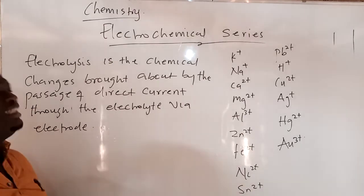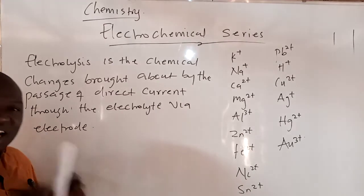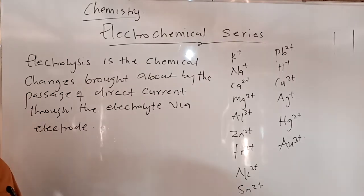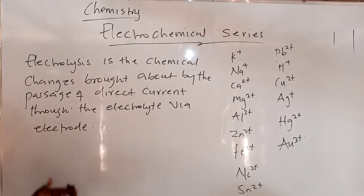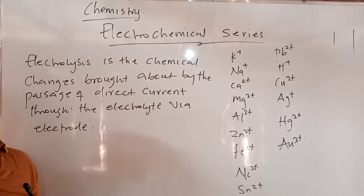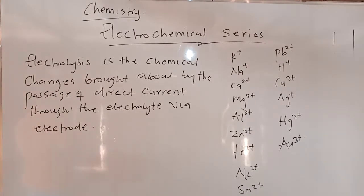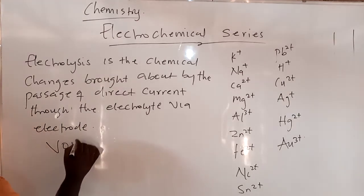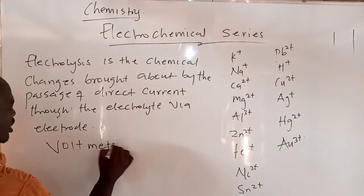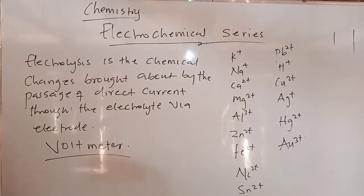Current enters through the anode and leaves through the cathode — that is a very important exam question. The process of electrolysis, or the equipment in which electrolysis takes place, is called a voltameter. The whole process of electrolysis takes place in a voltameter — that is an exam question.